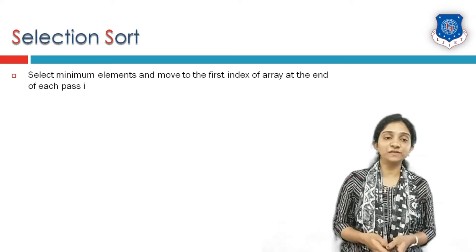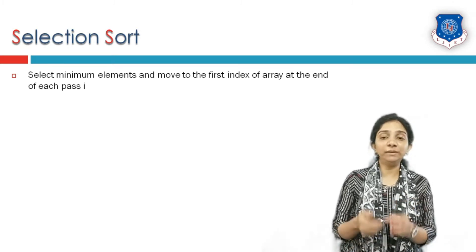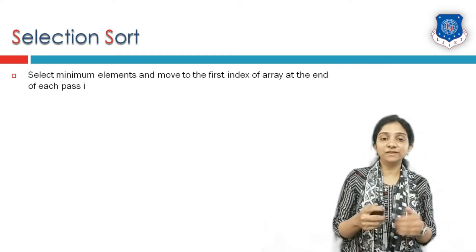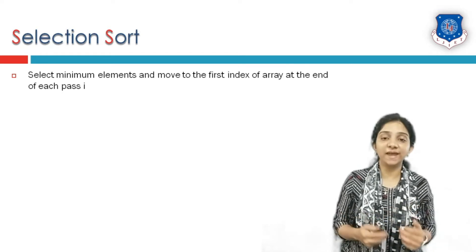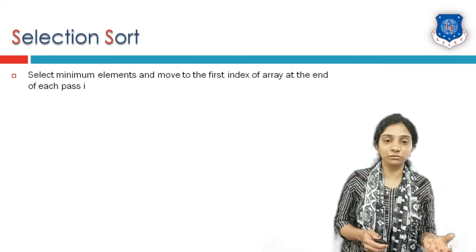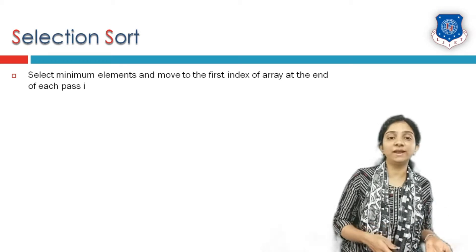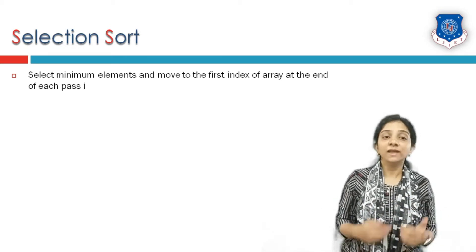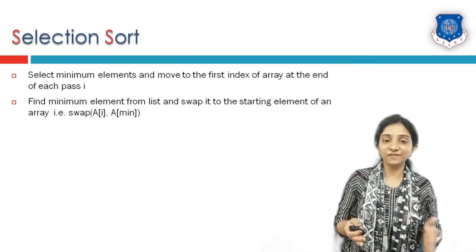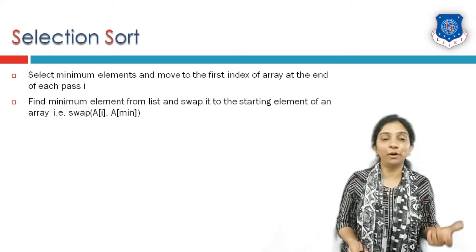Selection sort first finds out the minimum element from an entire array and tries to put that minimum element at the starting index of the array. The minimum element is moved or shifted to the first index of the array at the end of each pass. In the second pass, the next minimum element is found out and placed at the second index. In the third pass, the third minimum element is found and put at the third index, and likewise elements are getting sorted. The minimum element from the list is found and swapped with the starting element of the array with the help of a swap function.